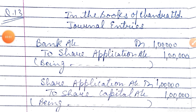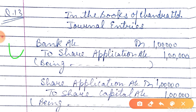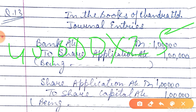Here is the solution. The first entry is bank account debit to share application account. There are 40,000 shares and the application money is ₹2.5, so we get ₹1,00,000. Narrations are the same as taught in previous classes — write them strictly. Now the shares are allotted to the applicants, so the entry will be share application account debit to share capital account.